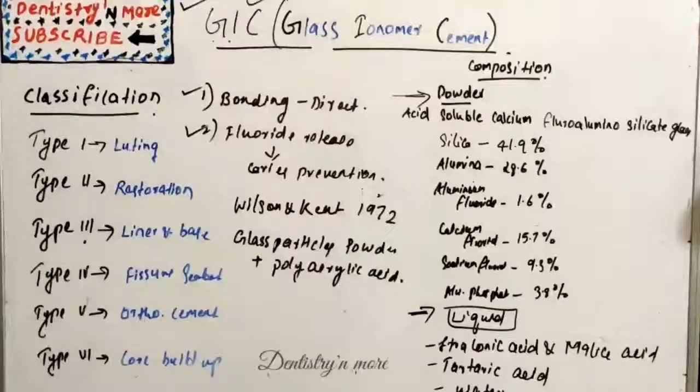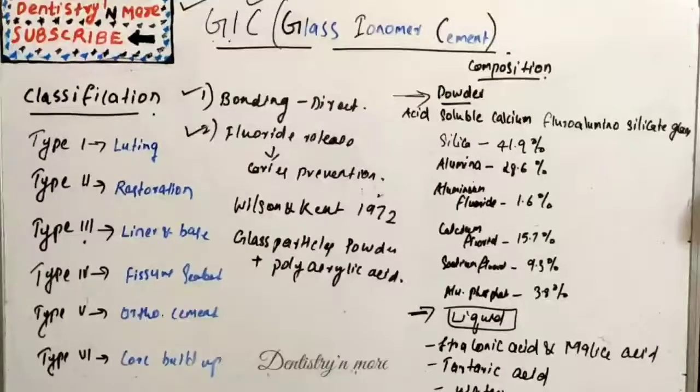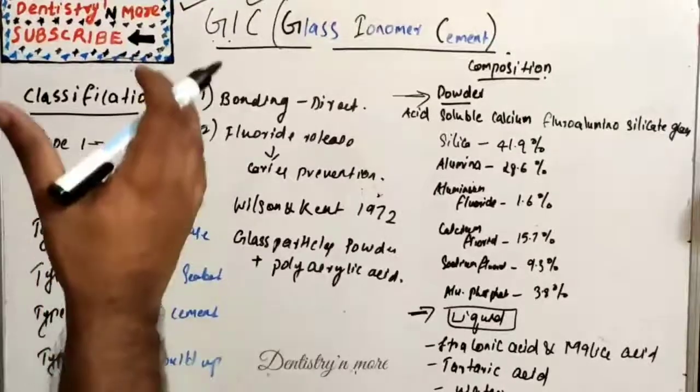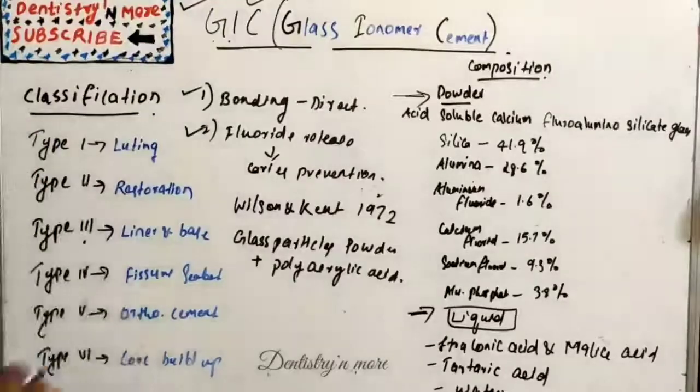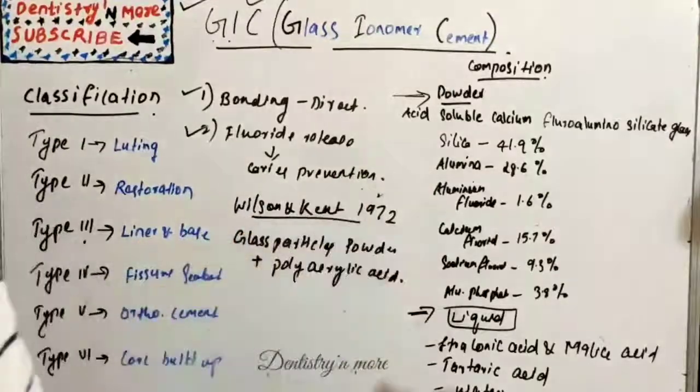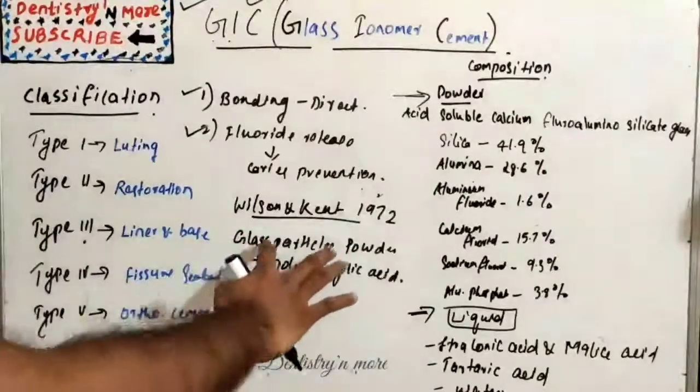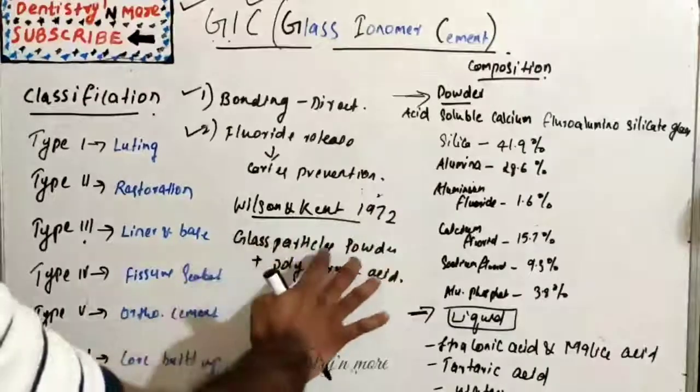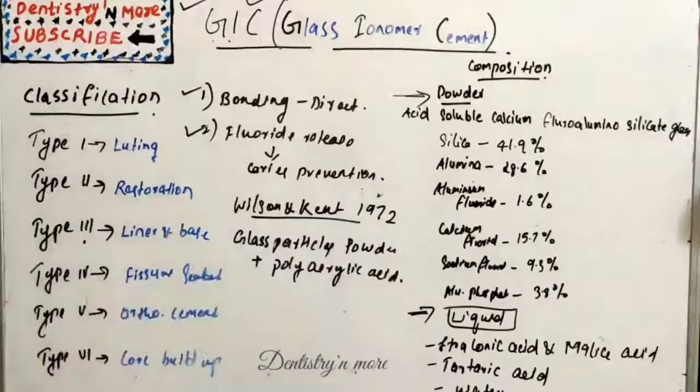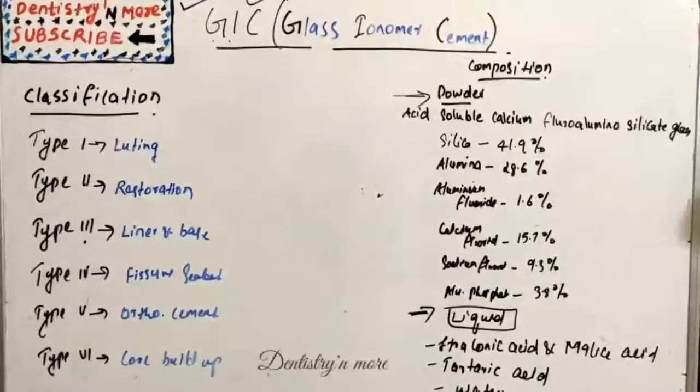They bond chemically to the tooth structure and release fluoride for a relatively long period. It was introduced by Wilson and Kent in 1972, basically it has got glass silicate glass particles and polyacrylic acid.